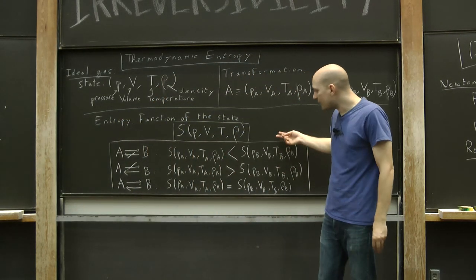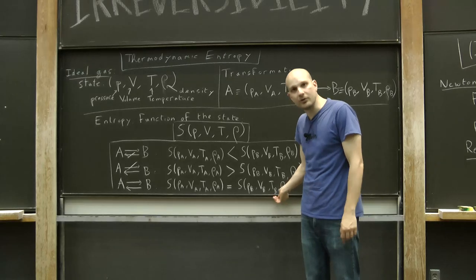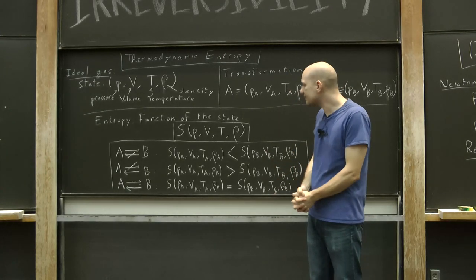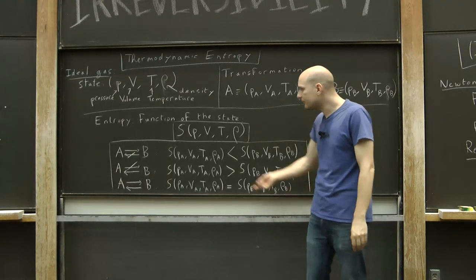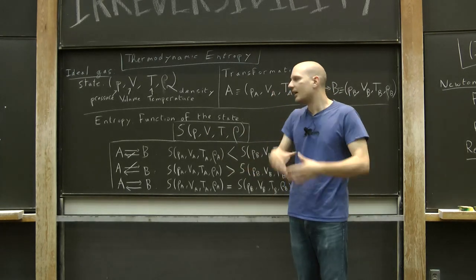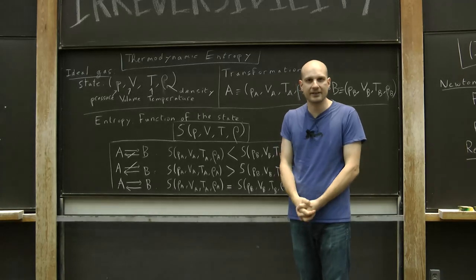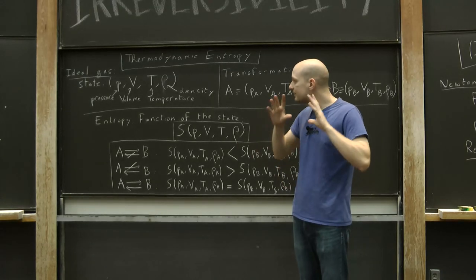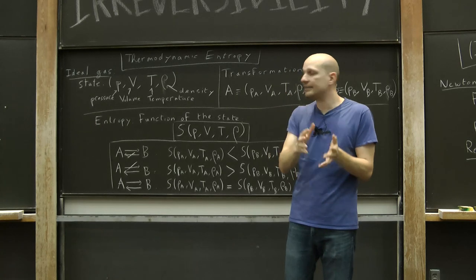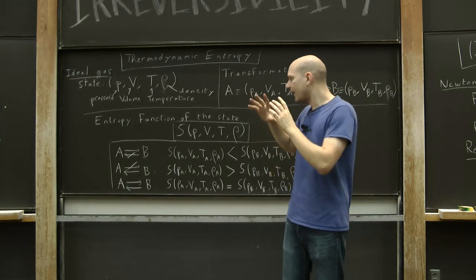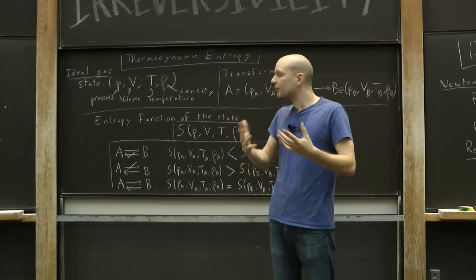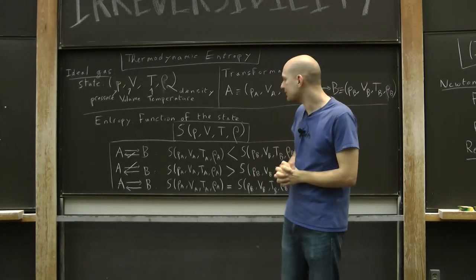Now, it turns out that with these three rules and some extra, very reasonable axioms, one can prove that the entropy is uniquely defined up to some small triviality. And this was actually done in detail by two mathematical physicists, Elliot Lieb and Jacob Ingvason. I'll put a link to their paper in the description for those of you who may be interested in details.